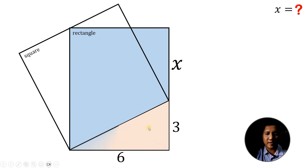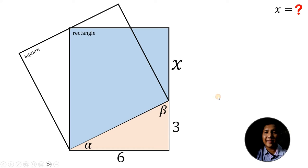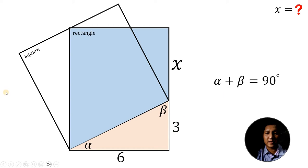Let's consider the right triangle on the bottom part. Let's call this angle alpha and this angle beta. Since it is a right triangle, alpha plus beta must be equal to 90 degrees. Now take note of this corner — the corner of this rectangle. This is 90 degrees, so if this angle is alpha, then the other angle must be equal to beta.